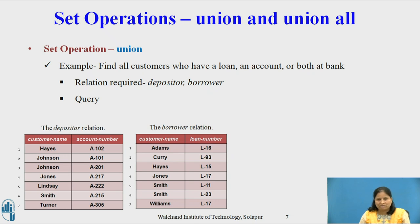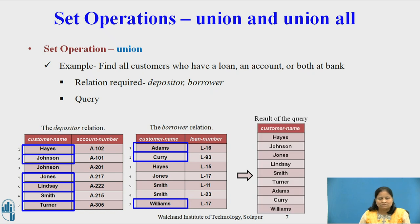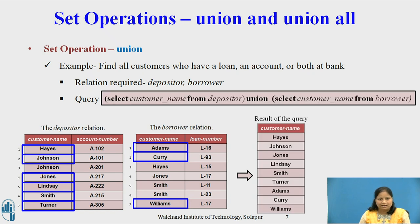Consider the example of Union. Find all customers who have a loan and an account, or both, at the bank. In these two tables, customer names shown in the blue box have a loan and account or both at the bank. So the result contains nine tuples. We write the query as: SELECT CUSTOMER_NAME FROM DEPOSITOR UNION SELECT CUSTOMER_NAME FROM BORROWER. The union clause produces distinct values in the result set, hence nine tuples will be in the result instead of all 14 tuples from depositor and borrower.